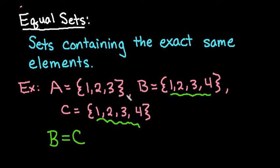A would be considered a subset of both B and C, but in order for them to be equal, every single element has to be exactly the same.